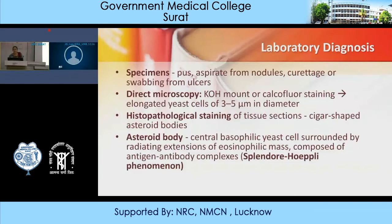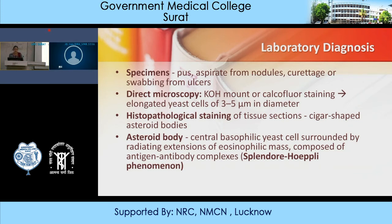For laboratory diagnosis of sporotrichosis, specimens are collected from nodulo-ulcerative lesions by aspiration, curettage, or swab from the ulcer. Direct microscopy using KOH mount or calcofluor white staining reveals elongated yeast cells of 3 to 5 micrometers in diameter. As it is a dimorphic fungus, only yeast cells are seen in skin specimens. Histopathological staining of tissue sections shows cigar-shaped asteroid bodies — a central basophilic yeast cell surrounded by radiating eosinophilic extensions composed of antigen-antibody complexes, also called the Splendore-Hoeppli phenomenon.